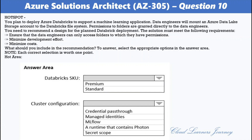Select the appropriate options. For Databricks SKU, options are premium and standard. For cluster configuration, options are: credential pass-through, managed identities, MLflow, a runtime containing Photon, and secret scope. The correct answers are: Databricks SKU — Premium (required for credential pass-through); cluster configuration — credential pass-through. When Azure Data Lake Storage credential pass-through is enabled, commands on the cluster can read and write data in ADLS without requiring service principal credentials.